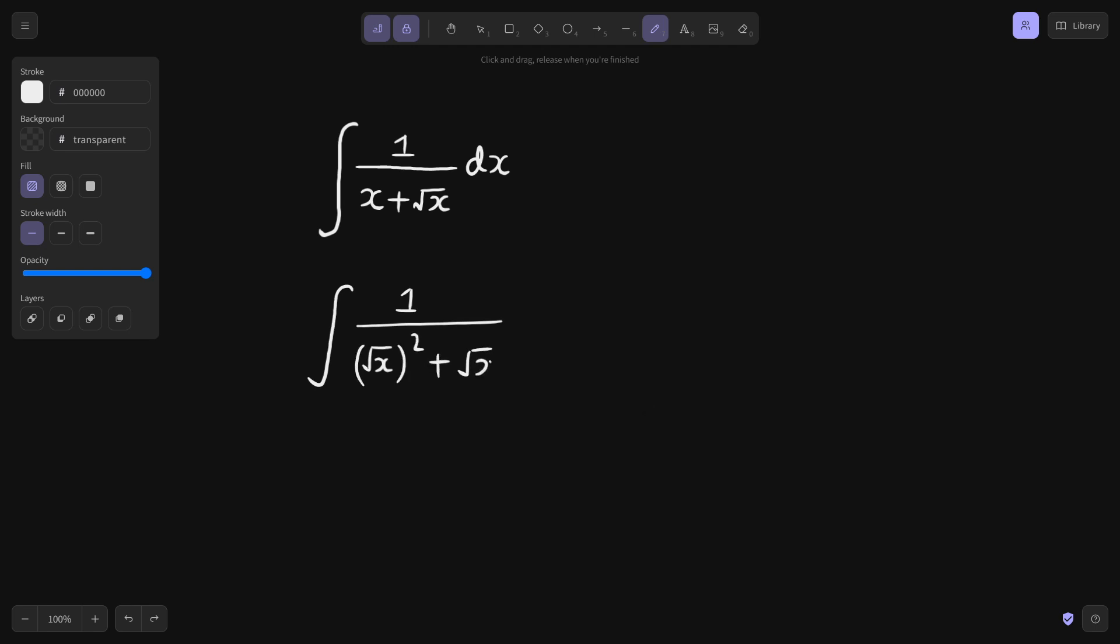Now if you can take root x common, somewhere in the back of our mind we know that the derivative of root x is 1 by 2 root x. You can apply the power rule and you will get this 1 by 2 root x.